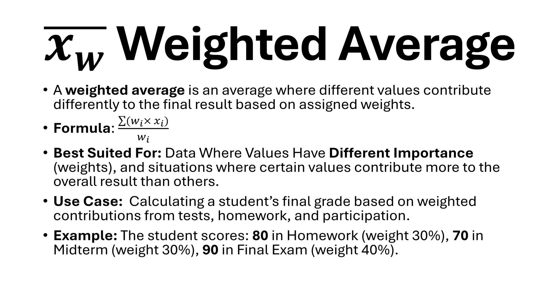Example: a student scores 80 in homework (weight 30%), 70 in midterm (weight 30%), and 90 in final exam (weight 40%). The weighted average equals 81.